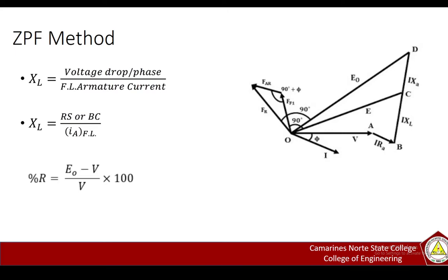In accordance with the figure earlier, there is a formula. If you use the graph, you can develop a formula, which is the leakage reactance XL equals RS or BC all over the armature current at full load. But if we use the voltage drop per phase and full load armature current, you can use this formula, which is the leakage reactance XL equals voltage drop per phase all over full load armature current.